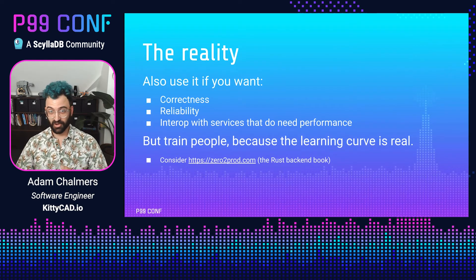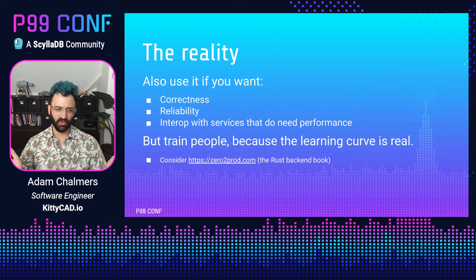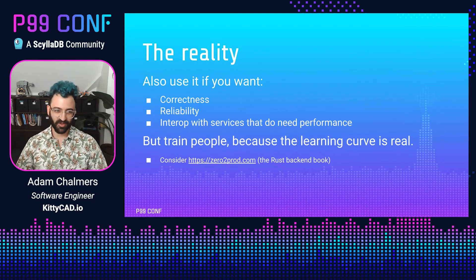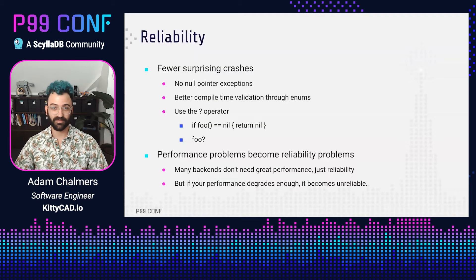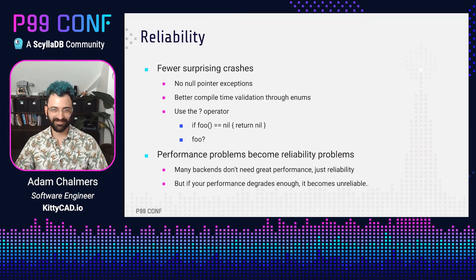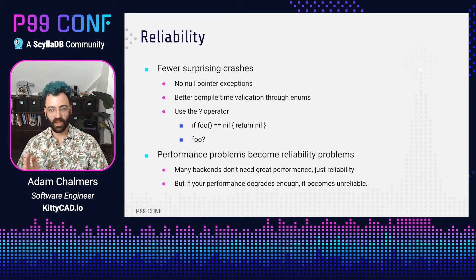There is definitely a learning curve with Rust, but you're kind of in luck if you're trying to write a backend in Rust, because there's a really good book called Zero to Production in Rust written specifically about how to write backends in Rust. I recommend that for training your employees, because the learning curve can be really difficult. But it's getting easier all the time. So let's talk a bit about why I chose Rust for these projects. Reliability is the main reason — I find Rust code to be more reliable than the alternatives.